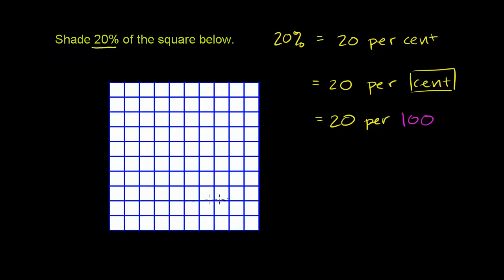So how many squares have they drawn here? Let's see, if we go horizontally, we have 1, 2, 3, 4, 5, 6, 7, 8, 9, 10 squares. If we go vertically, we have 1, 2, 3, 4, 5, 6, 7, 8, 9, 10.